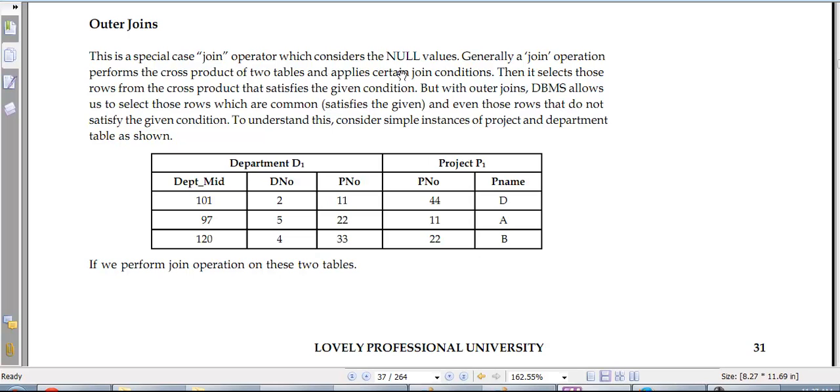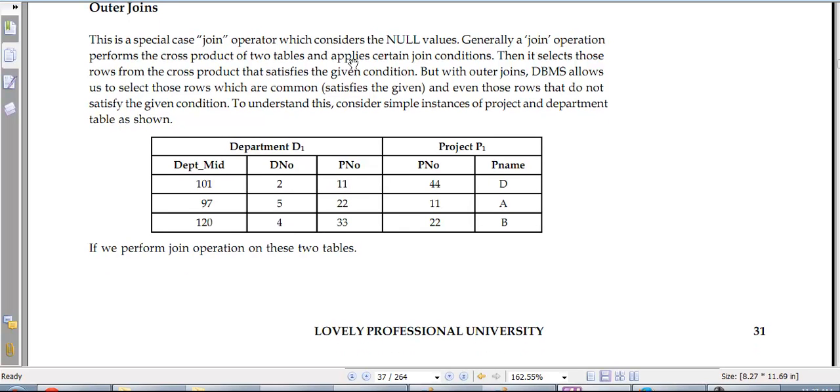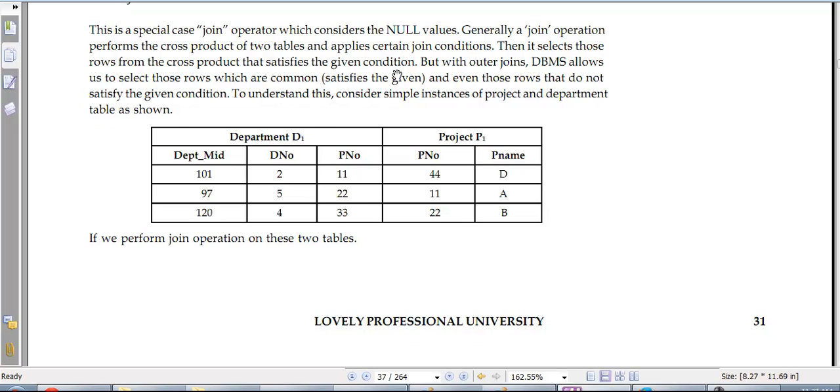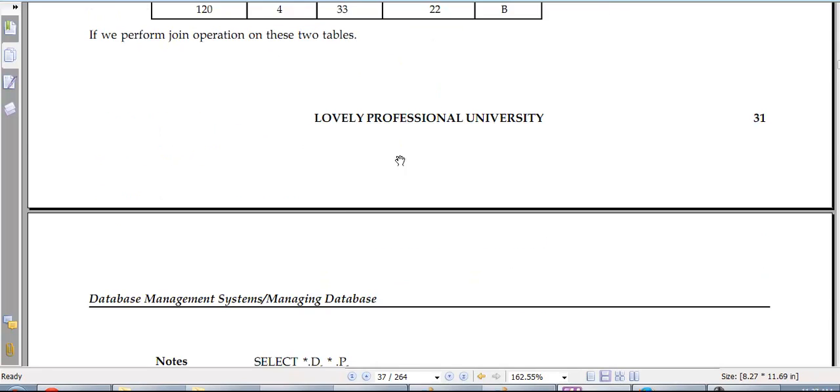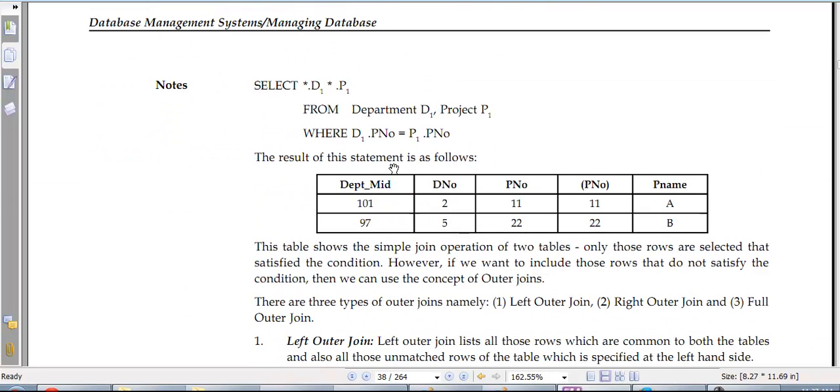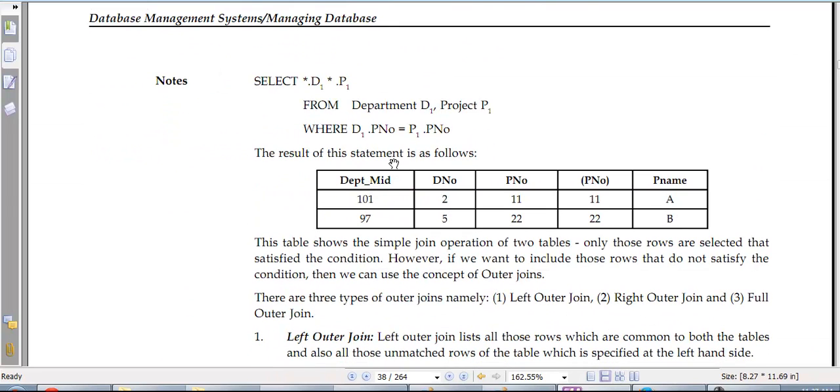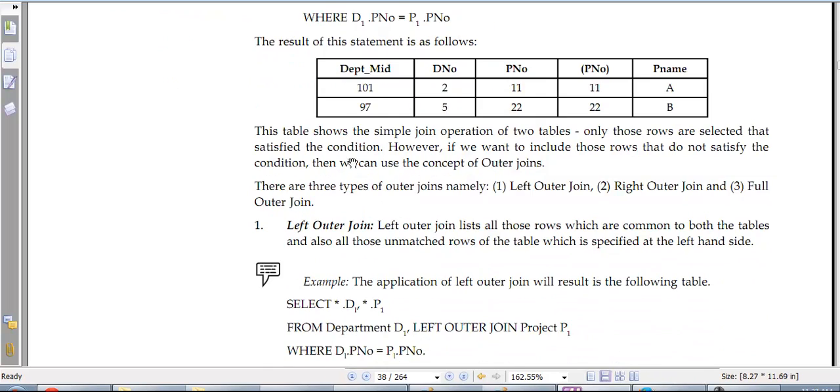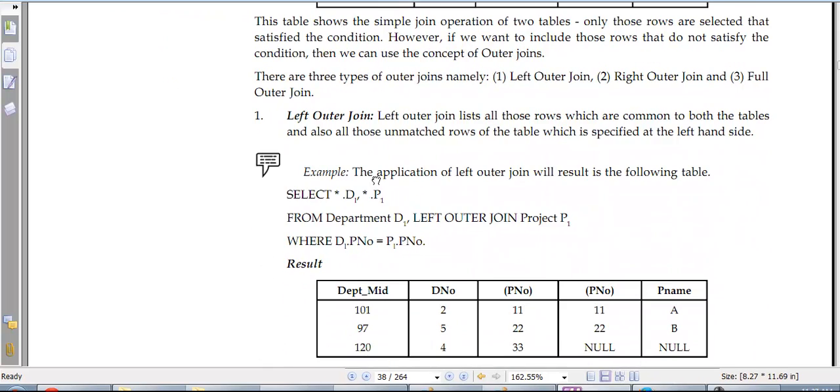Then we have outer join. In this case you have a join operator which considers the null value. Generally join operations perform a cross product and then apply certain join conditions to select rows and columns that satisfy the given condition. But the outer join allows you to select rows which are common and even rows which do not satisfy any condition. So the other part was that you have at least one thing in common, but you can also have something that is not in common. So that's how that would work.